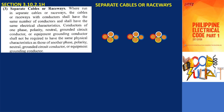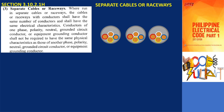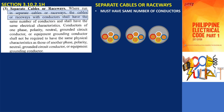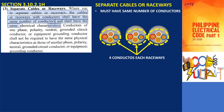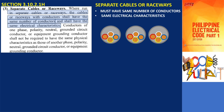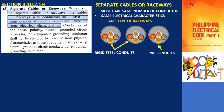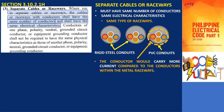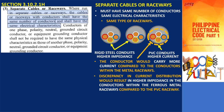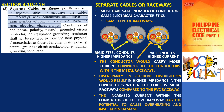Where paralleled conductors are run in separate raceways or cables as specified in subsection 3.10.2.1h3, the cables or raceways with conductors shall have the same number of conductors and shall have the same electrical characteristics. In this context, electrical characteristics specifically refer to properties such as the raceway material. It is crucial to ensure that all raceways within a parallel set of conductors are of the same type. For example, if two of the raceways are rigid ferrous metal conduits and one raceway is a rigid non-metallic conduit, the conductor within the non-metallic conduit would carry more current compared to the conductors within each of the metal raceways. This discrepancy in current distribution would result in higher impedance in the conductors within the ferrous metal raceways compared to the PVC raceway, and the increased current within the conductor of the PVC raceway has the potential to cause overheating and insulation damage.